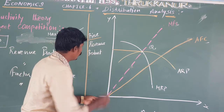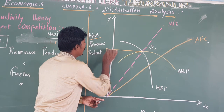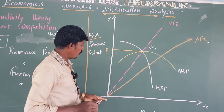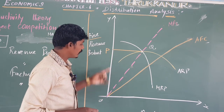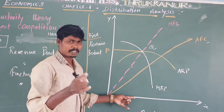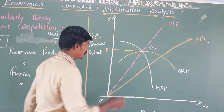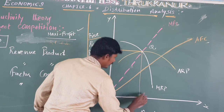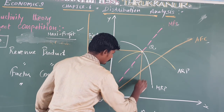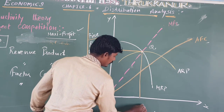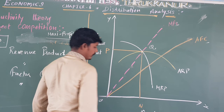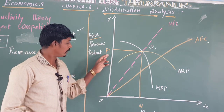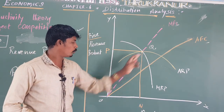OP is the factor price or wage rate. From the equilibrium point Q, we draw a line down to the X-axis giving us the factor employment level. The point N is identified on the diagram corresponding to this equilibrium.